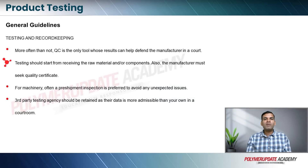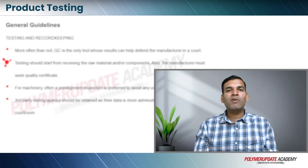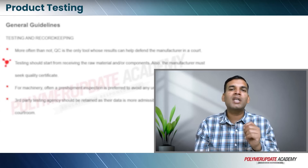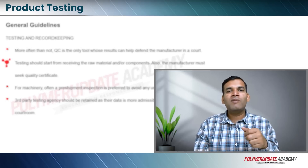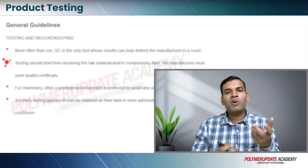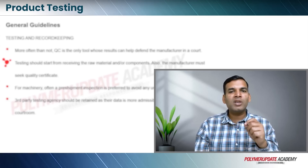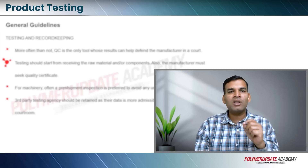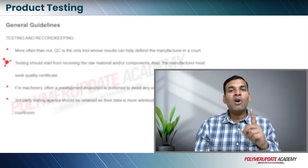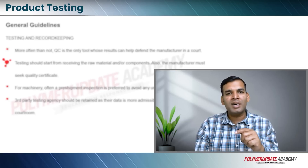Testing should start from receiving the raw material or the components. The manufacturer must also seek the quality certificate. For example, injection molders never test for tensile strength. So if there is a problem where the part was pulled and failed earlier than anticipated, the producer is going to have to produce the test certificate or the quality control lab certificate of the manufacturer because he doesn't test it himself.